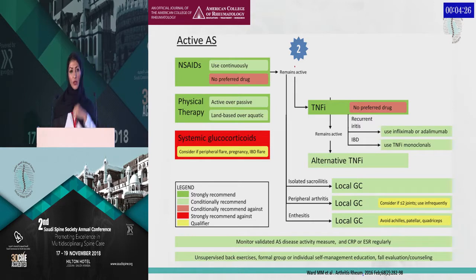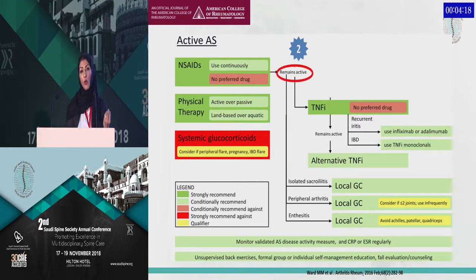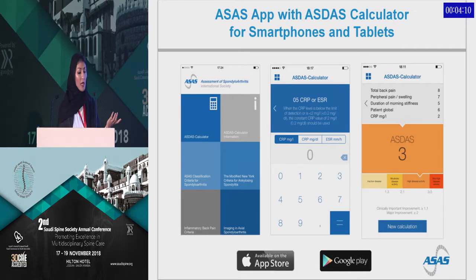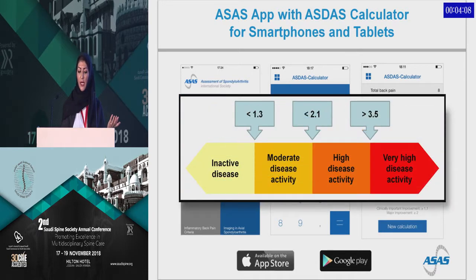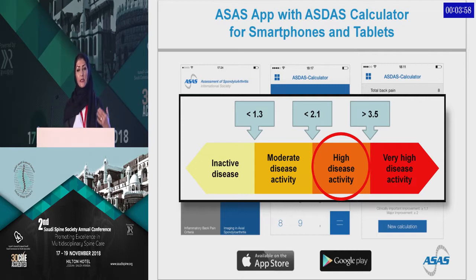Now, let's go to the second point. Once I've given my patient NSAIDs, how do I assess disease activity and know if the disease is still active? We have an application called ASDAS, which we download on our iPhone. We can tell if the patient has inactive, moderate, high, or very high disease activity. When I applied it to my patient, she had high disease activity.